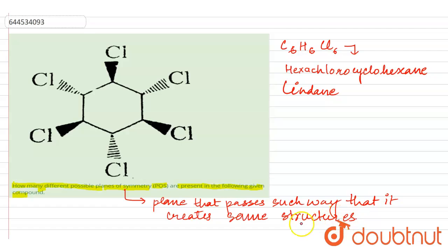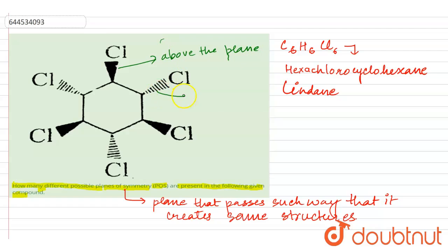First of all, the dark color shown means it is above the plane, and the dotted one means it is below the plane.